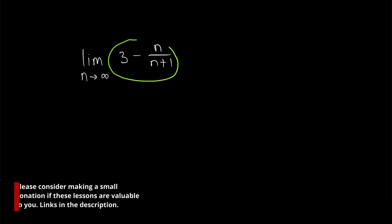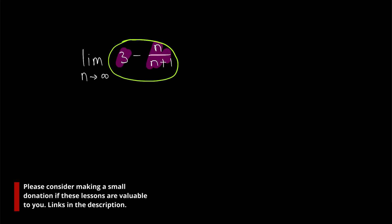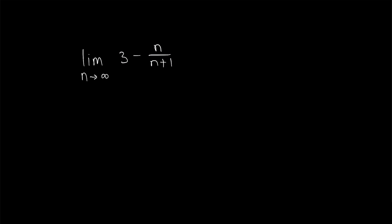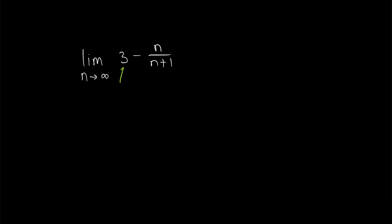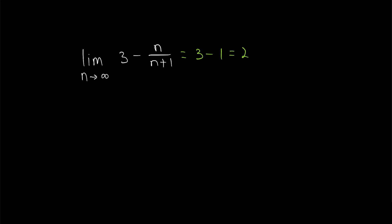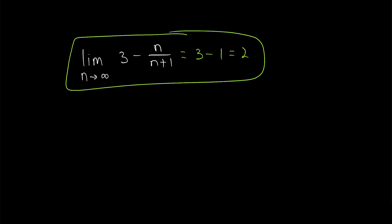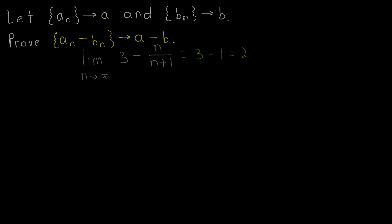It'd be really nice if we could look at a sequence like this where the nth term is 3 minus n over n plus 1 and say: 3 is a constant sequence that converges to 3, n over n plus 1 is a sequence that converges to 1, and so this sequence — which is one of them minus the other — must converge to 3 minus 1, or 2. That would save us the time of always having to prove that a sequence like this converges using the definition, but we don't know if the limits of convergent sequences actually behave like this unless we prove it.